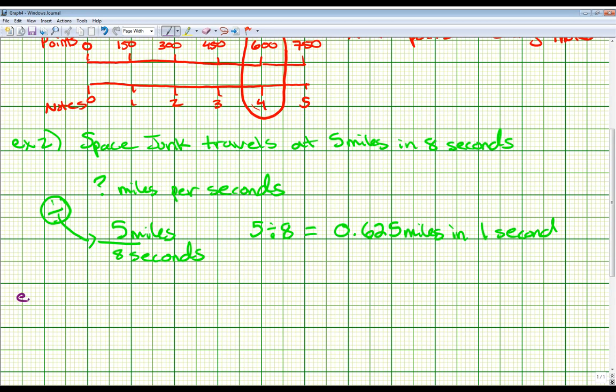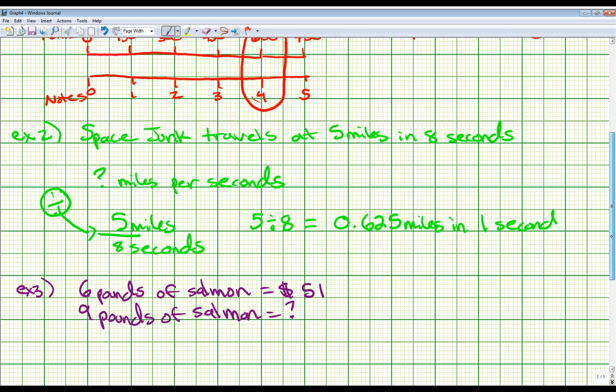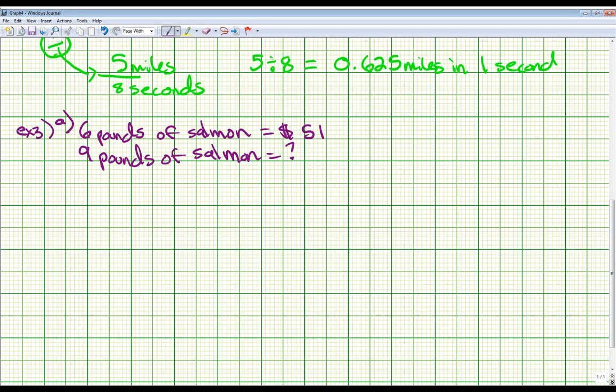All right, moving on to example three. It says a chef buys six pounds of salmon fillets for $51. How much will the chef pay for nine more pounds of salmon fillets? So let's jot out what they gave us. They tell us that six pounds of salmon costs $51. And the question says, how much will the chef pay for nine more pounds of salmon fillets? So I want to know how much nine pounds of salmon will cost. So I'll put a question mark there. And this is question A for example three, by the way. There's two parts to this one.